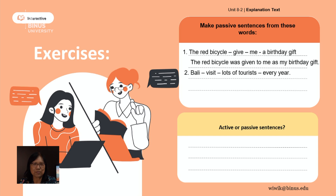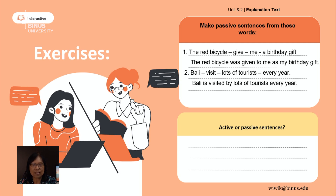Now number two — same task, please use passive construction. The words are: 'Bali,' 'visit,' 'lots of tourists,' 'every year.' The answer: 'Bali is visited by lots of tourists every year.' You have to be 'is' and then past participle 'visited.' Well done.